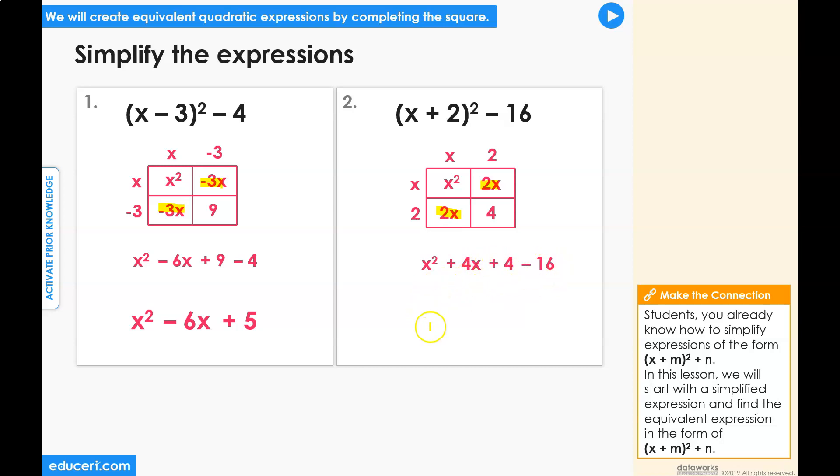Adding these final numeric terms, the final simplified expression is x squared plus 4x minus 12.